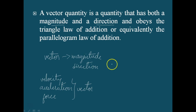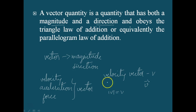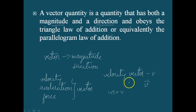Usually a vector, such as velocity vector, is represented by V with an arrow placed over its letter, because it deals with both magnitude and direction. If you want to indicate only the magnitude of a vector, it is often called its absolute value and is indicated using the modulus symbol. That is the difference between the symbols used for a vector and its magnitude.